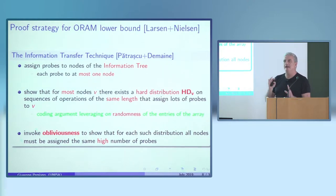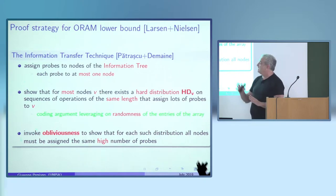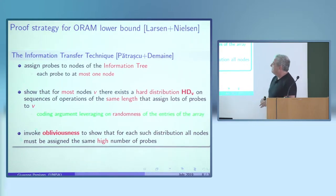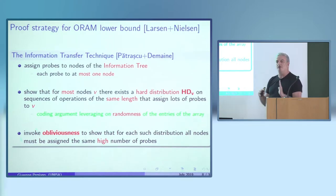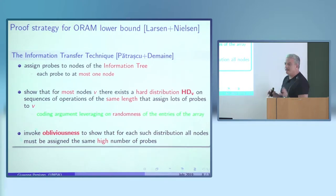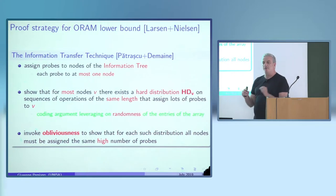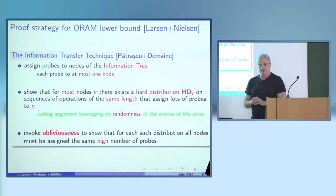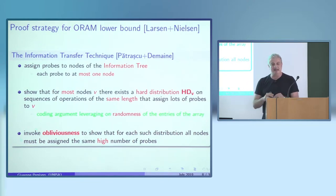The Larsen-Nielsen lower bound used the information transfer technique by Patrascu and Demaine. It essentially has three steps which we will reproduce for our lower bound, with some technical difficulties to address. They have a way of assigning probes to nodes of what is called the information tree — as seen in Kevin's and Casper's talks.